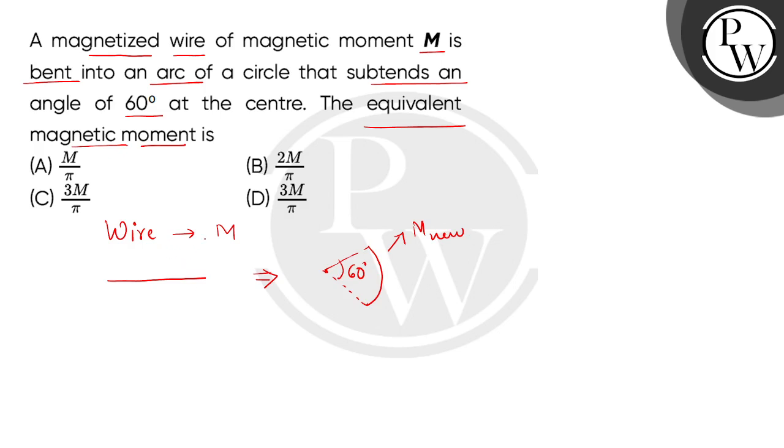This wire's magnetic moment is given. So children, let's assume that the radius of the arc of a circle is R. We get the length of arc equals to 2πR divided by 360 degrees multiplied by the angle, that is 60 degrees. So this will cancel. We get the length of arc as πR divided by 3.